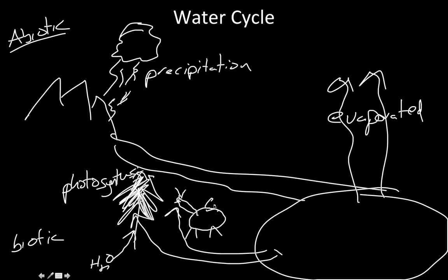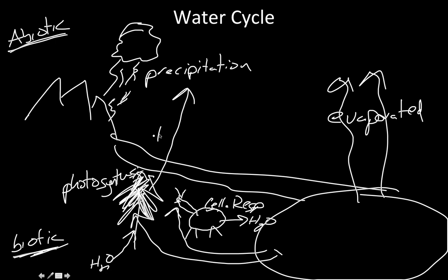All these animals go through cellular respiration, and eventually they will also urinate and return water to the abiotic parts of the environment. Photosynthesis is a way for water to go from the abiotic parts of the ecosystem to the biotic parts — the living plants. Water lost from plants to the environment is called transpiration, which is like evaporation but specifically for plants. The products of cellular respiration or urination return water from biotic parts back to the abiotic environment.